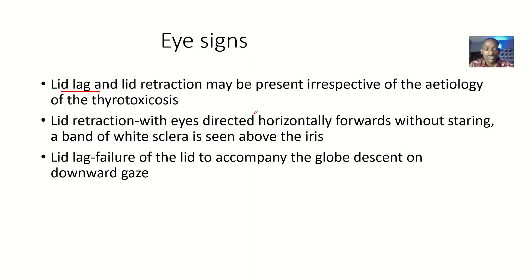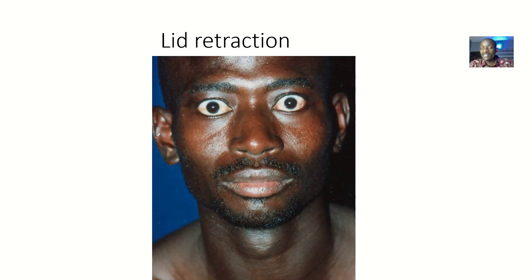Lid retraction is when the eyes are directed horizontally forward without staring, and a band of white sclera is seen above the iris. Let me just demonstrate — your lids are backward, so the white portion of your eye is so much exposed. That's lid retraction. Instead of your lids going forward to cover the sclera, your lid is now lagging behind, retracting backward.